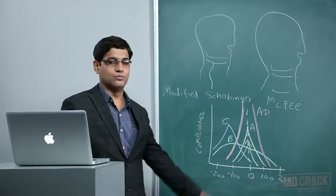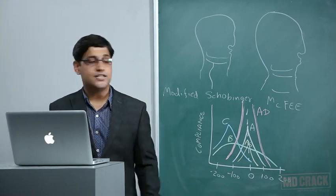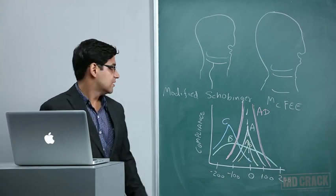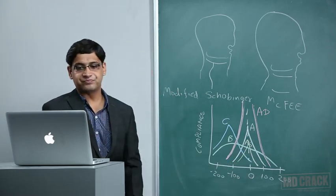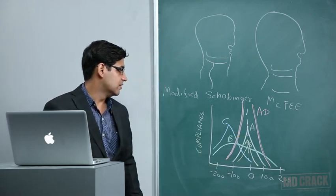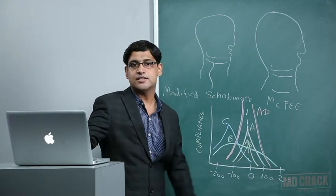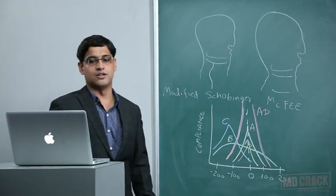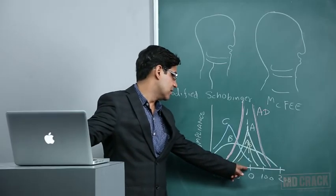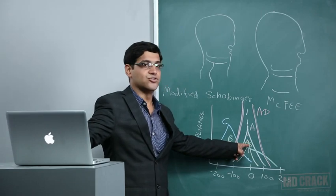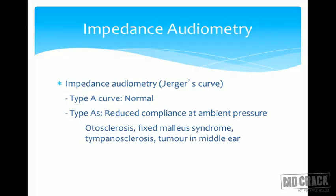In impedance audiometry, the curves are known as Jerger's curves. On the Y-axis is compliance; on the X-axis is pressure (positive and negative). Type A is the normal curve — at zero pressure, compliance is maximum. Type AS (reduced compliance at ambient pressure) — the compliance is reduced at normal pressure — seen in otosclerosis, fixed malleus syndrome, tympanosclerosis, or tumor in the middle ear, i.e., whenever there is fixity in sound conduction.